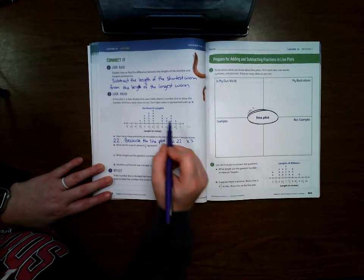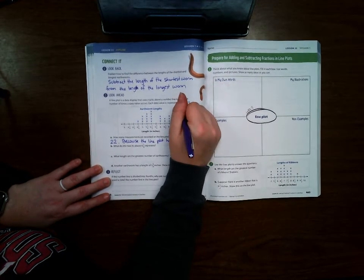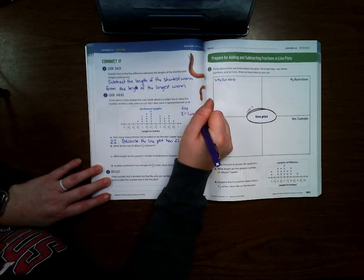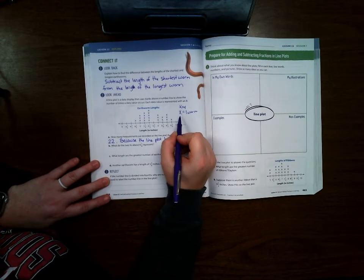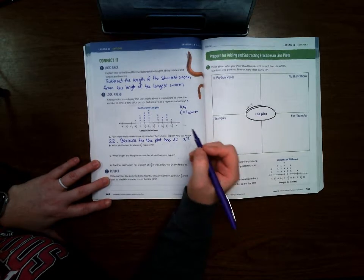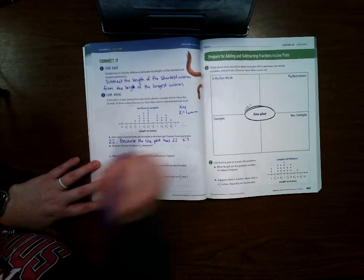Typically when you're working with line plots, you'll have a key somewhere. And it'll say like x equals one worm. Sometimes you have to be careful because sometimes that x will equal two worms or three worms or five worms. So you have to be really careful and make sure that you're looking at that.